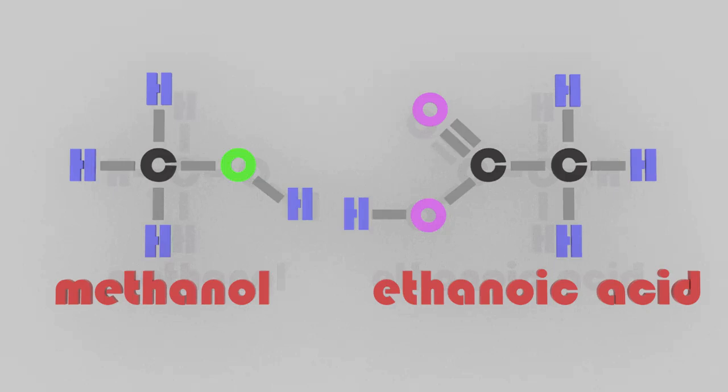If you react an alcohol with a carboxylic acid in the presence of sulfuric acid, you'll make an ester plus water. But where does the oxygen come from in the water? Does it come from the ethanoic acid or does it come from the methanol?